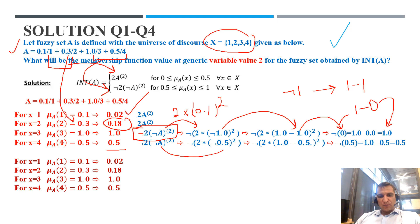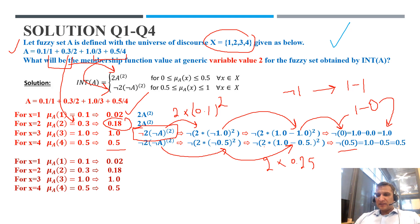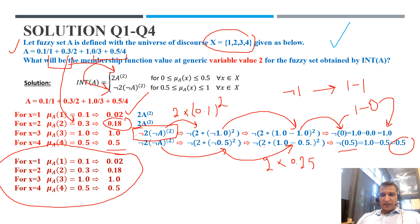For membership value 0.5: replace A with 0.5. Negation of 0.5 is 1 − 0.5 = 0.5. Then (0.5)² = 0.25, and 2 × 0.25 = 0.5. Applying negation again: 1 − 0.5 = 0.5. So the final answer is 0.5. When membership value equals 0.5 or 1, the new membership value stays the same. This completes the solution for the first four questions.